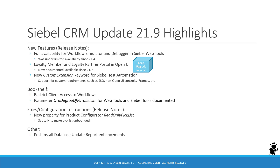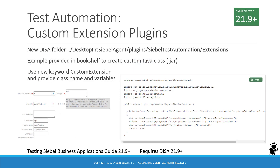According to the 21.9 bookshelf, there are several new features of a minor nature. Client access to workflows can now be restricted by means of new system preferences and user properties. The Aura degree of parallelism parameter, which has been around for a while, is now documented in Bookshelf. And skimming the configuration instructions in release notes reveals a new property for product configurator: read-only picklists, which you can use to make picklists in the configurator UI unbounded. We also spotted some enhancements to the post-install database update HTML report.